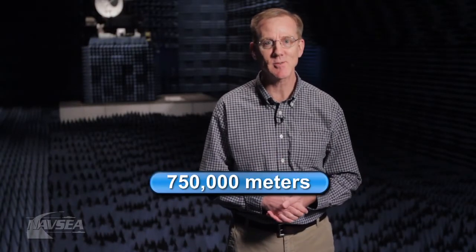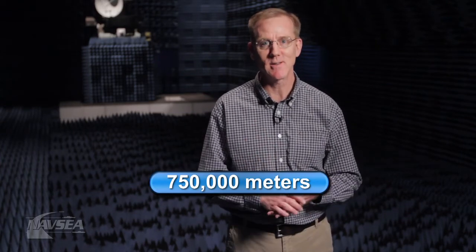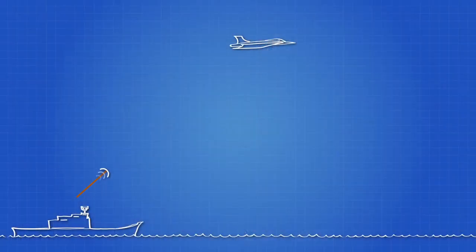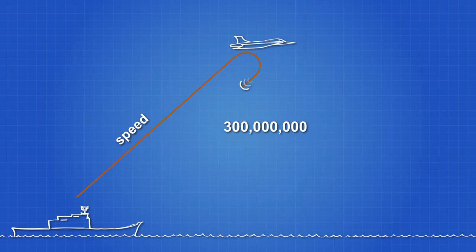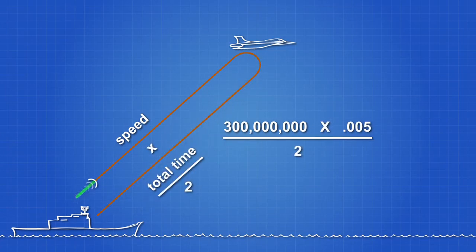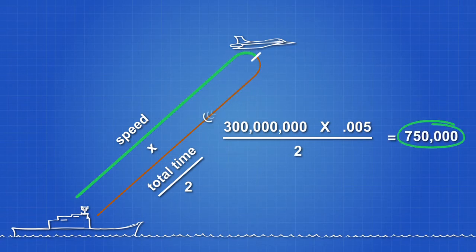Well, what did your class come up with? Did you say 750,000 meters? If you did, you are correct. You might have calculated 1,500,000 meters, but it is important to remember that the radar wave travels to the fighter jet and back to our ship. So dividing the total distance by 2, which represents half the distance the wave travels, will give you the correct answer. Thank you for allowing me into your classroom to teach you a little about radio waves and echoes. The next time you use your cell phone to send a text message or a microwave oven to make popcorn, stop and think for a moment about those radio waves and how they not only help make your life more convenient, but also remember how they help keep our country a safer place to live.